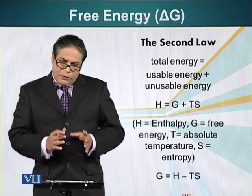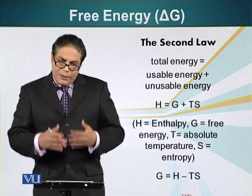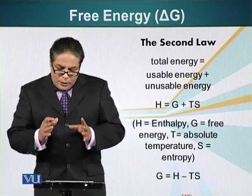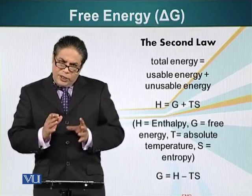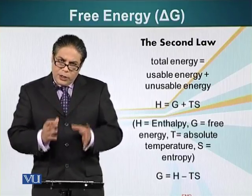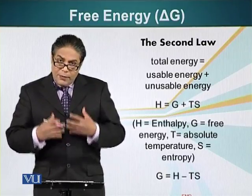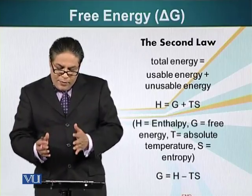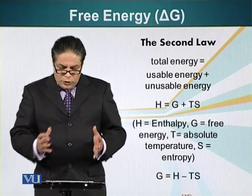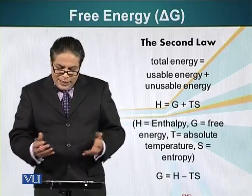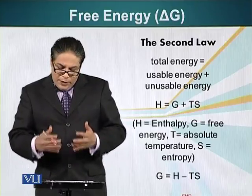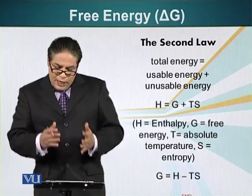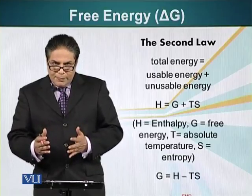The total energy of the system is represented by H and is called enthalpy. Since we are interested in usable energy — the energy we can use to perform useful work — we can rearrange this equation using simple algebra. The equation, when rearranged, reads as G equals H minus TS. We will continue with that in the next module.